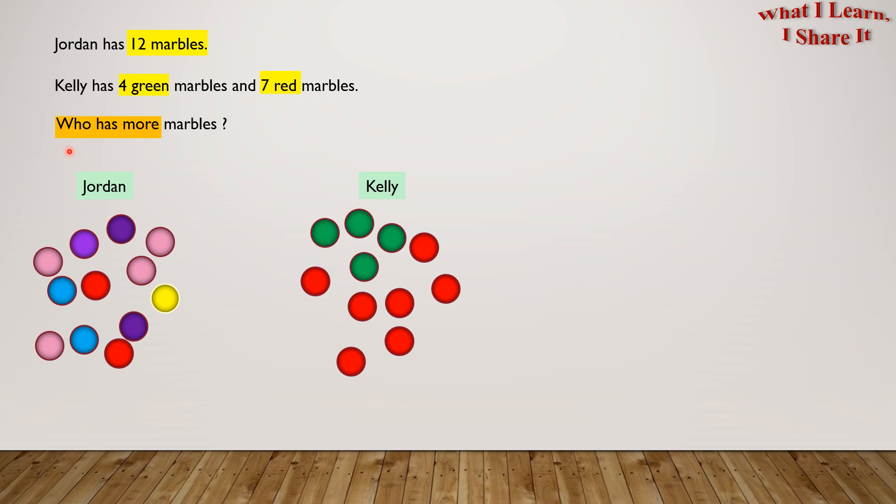Who has more marbles? Let's find out Kelly's total marbles by adding the green and red marbles. So Jordan's marbles equals 12. Kelly's marbles equals four plus seven equals 11 marbles. So definitely Jordan has more marbles. Yay! We solved the problem.